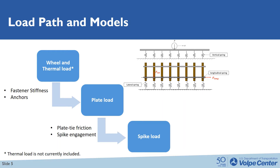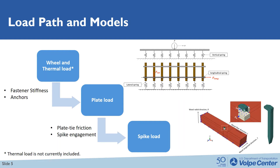Next, the plate load is then distributed to an individual spike — we call it spike load. This load path is affected by friction between the plate and tie, and spike engagement within the plate. To estimate the spike load required to initiate spike failure, we built a finite element model as shown in this figure. This model is composed of a single spike, a plate, and a timber tie. Taking different magnitudes of the spike load as input, we are able to see the minimum force required to initiate the spike failure.